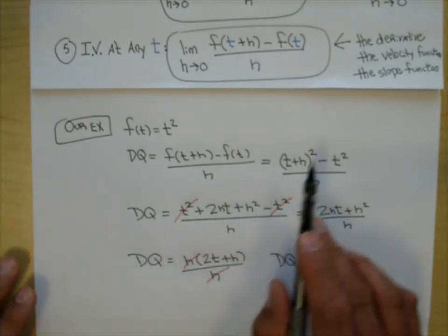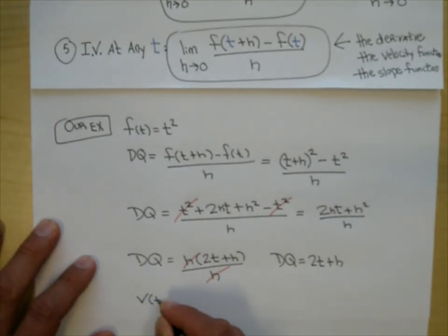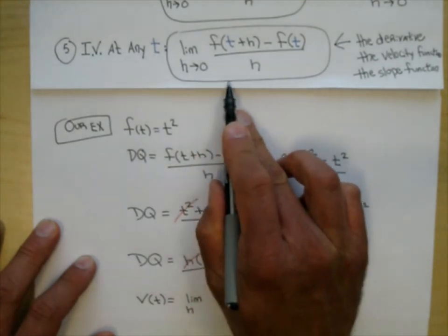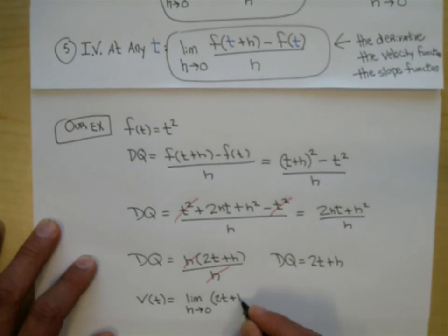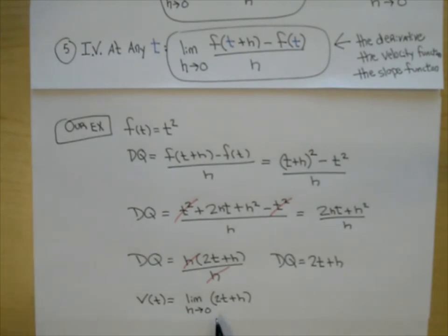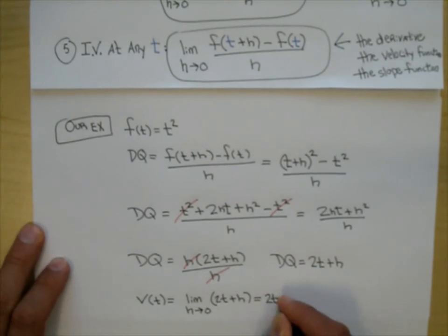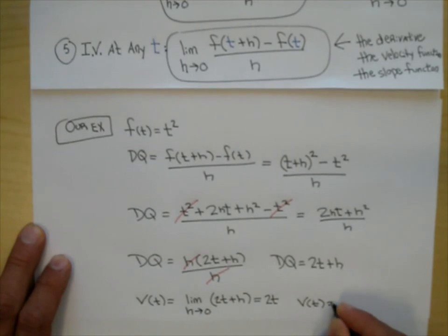Factor h out of the top: h times (2t plus h), all over h. The h's cancel. The difference quotient equals 2t plus h. So our velocity function — we could call this v of t — is the limit as h approaches 0 of the DQ, which is 2t plus h. Plugging in 0 for h gives us just 2t. This tells me the velocity function of t squared is 2t.